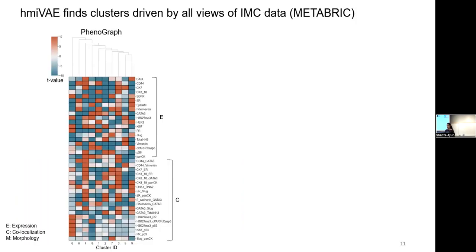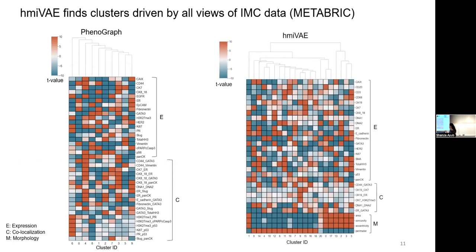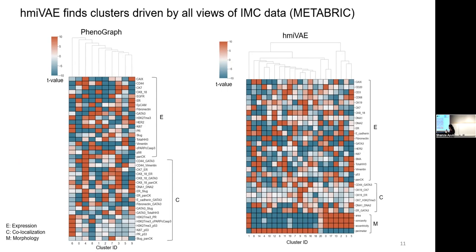And what I've found is that in comparison to PhenoGraph, here you see a heat map with the cluster IDs on the x-axis and the features on the y-axis and the colors correspond to the t-value. And what we're seeing is that hmiVAE is actually able to find clusters that are informed by all of the views that went into the model. Whereas PhenoGraph, most of the clusters are only defined by their expression or colocalization features.